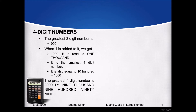Now, what is the greatest four-digit number? The greatest four-digit number is 9999, that is nine thousand nine hundred and ninety-nine. We can see here that a new place has been added to the number. Earlier with three-digit numbers there were three places, and now with four-digit numbers a new place is added — and that place is thousands.